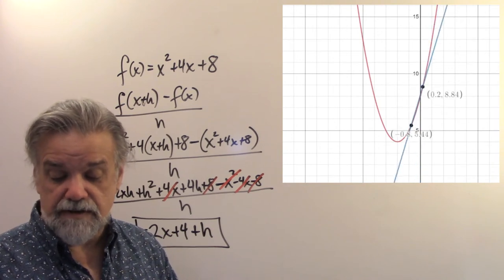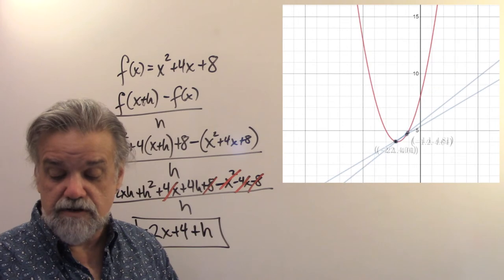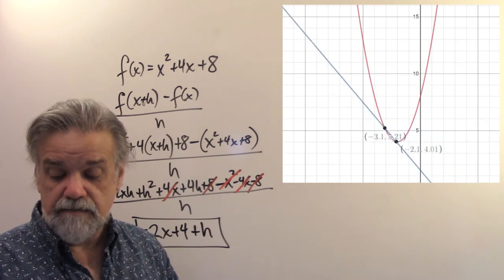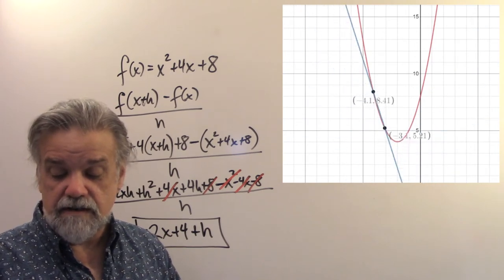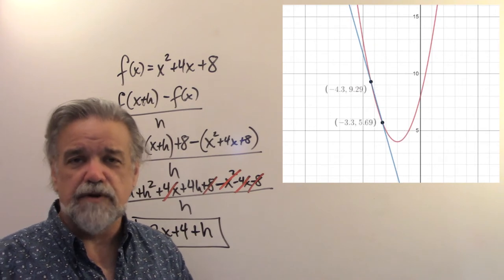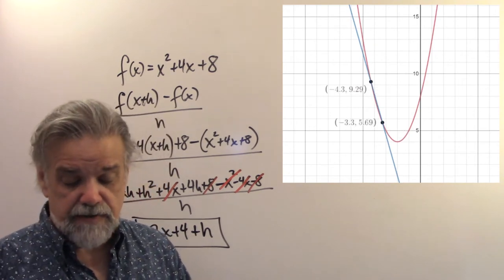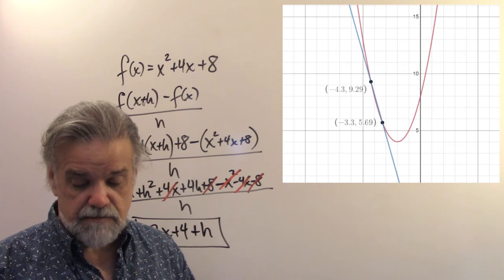So, the slope of the line, if h is small enough, gives you a pretty good idea of what the graph is doing at that moment. Whether it's going down or whether it's going up.